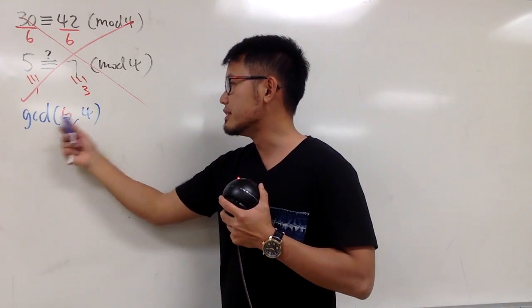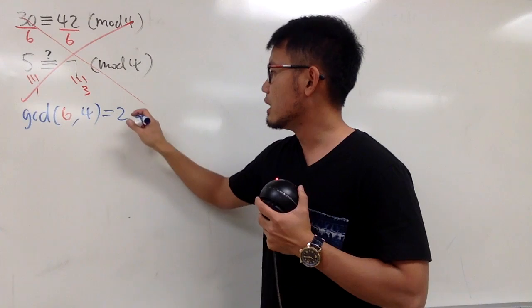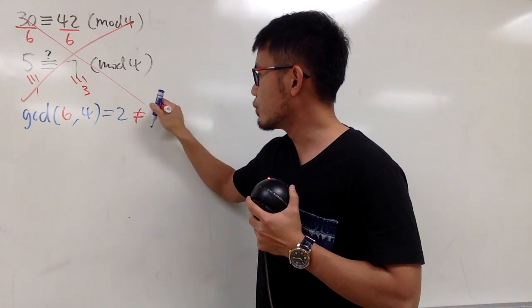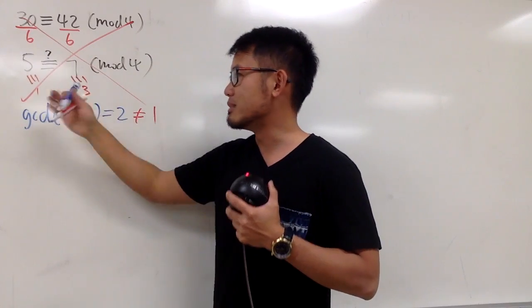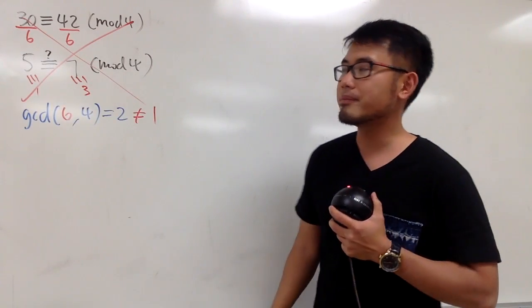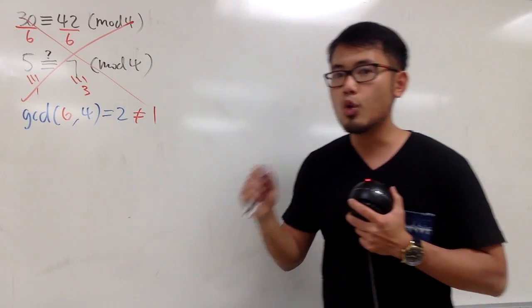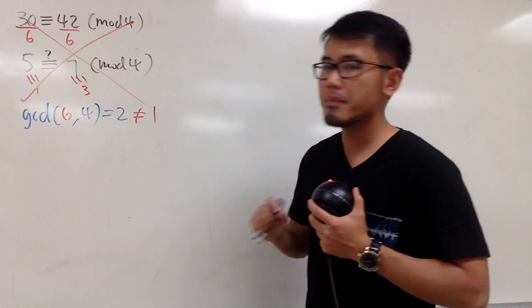In our case, we divide the 6 on both sides, and this is mod 4. And the greatest common divisor of 6 and 4 is 2. And if this number is not equal to 1, we are not allowed to divide on both sides because we end up with another congruence that's no longer true. So be really careful when we are trying to divide both sides of a congruence by the same number.